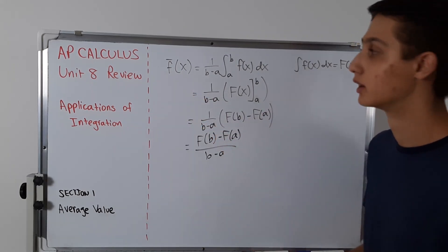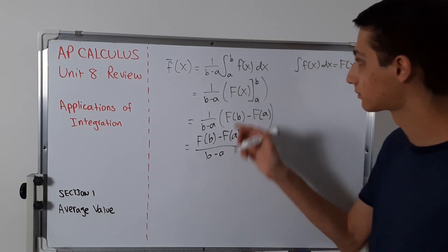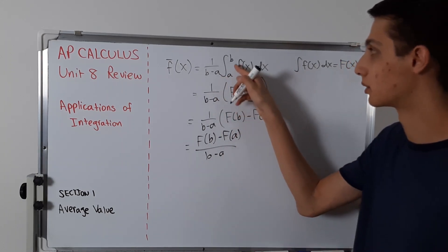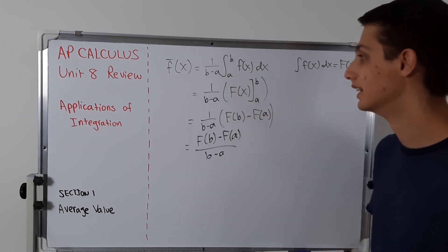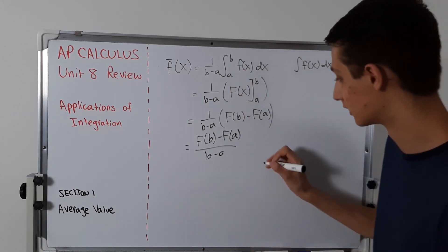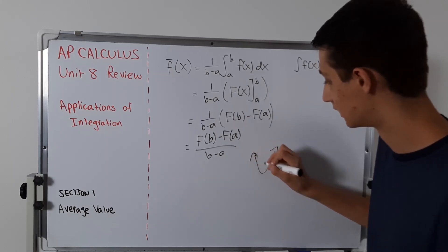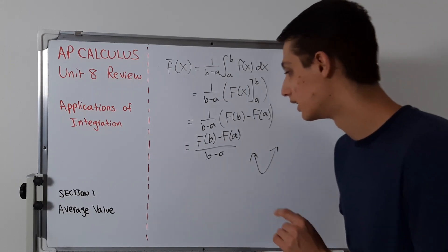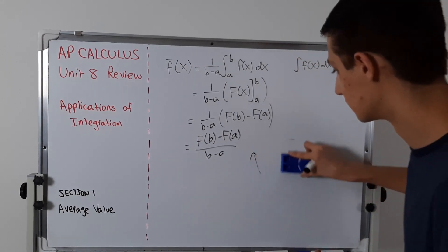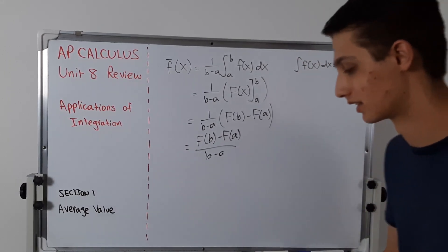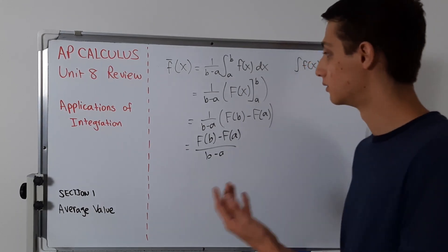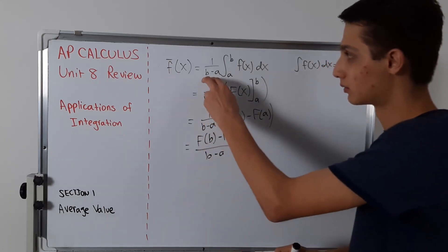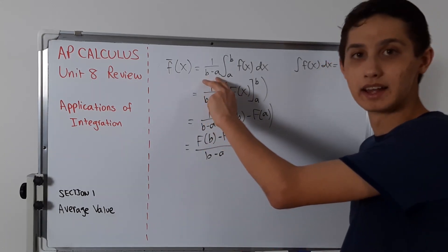You can plug in any function — let's say x squared — into this formula, and you have to do it on a particular interval. x squared keeps going off to infinity, so if you tried to plug in infinity it won't work. But this will work for any question AP gives you. They'll give it to you on a specific interval, and this b minus a is just the length of that interval.